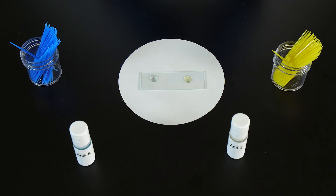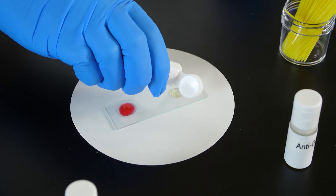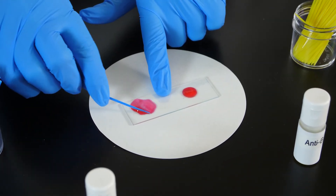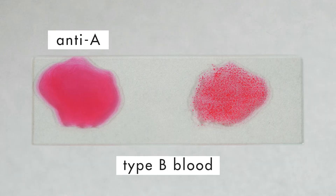Anti-B antibodies react to antigen B in type B blood. If type B blood is added to a serum containing anti-A antibodies, no reaction occurs. However, when type B blood is added to a serum containing anti-B antibodies, the red blood cells stick together.